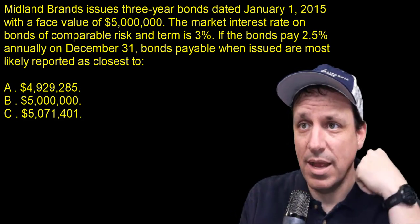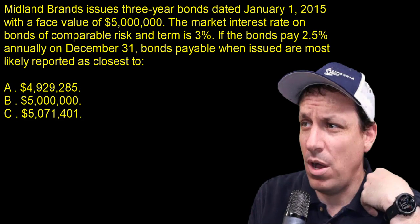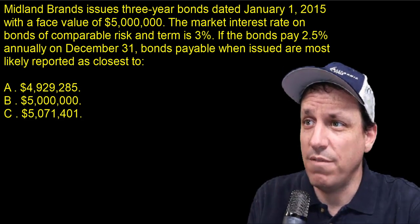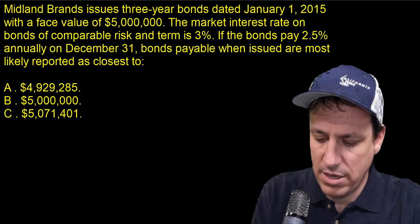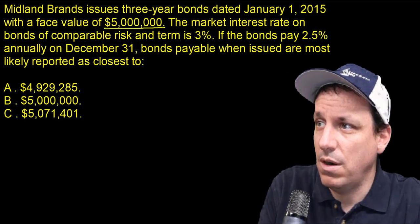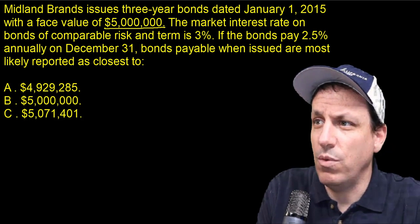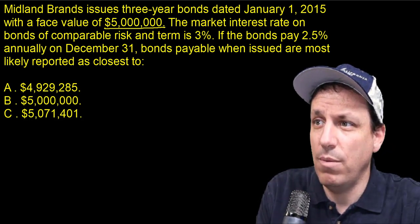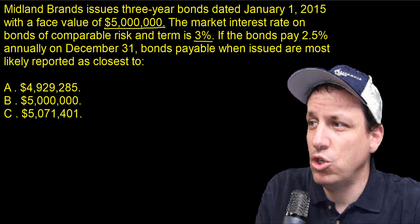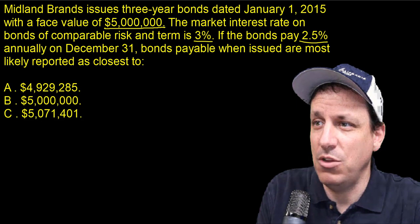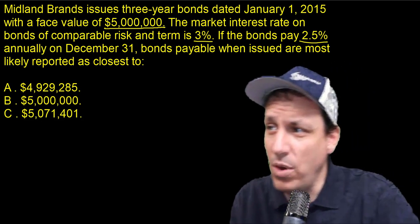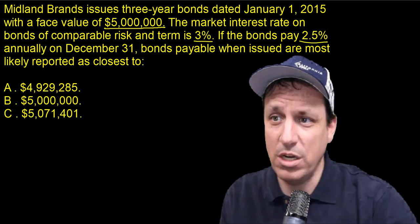A company, Midland Brands, issues a three-year bond dated January 1st, 2015 with a face value of $5 million. The market interest rate on bonds of comparable risk is 3%. If the bonds pay 2.5% annually at the end of the year, the bonds payable when issued are most likely reported as closest to what?